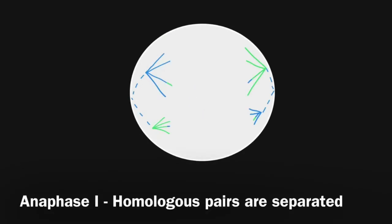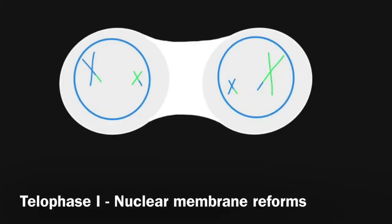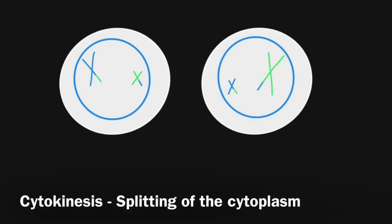Next is anaphase 1, where the homologous pairs are separated. The spindle fibres attach to the centromere and pull each chromosome in the homologous pairs to opposite poles. The nuclear membrane reforms during telophase 1, and this is followed by cytokinesis, where the cytoplasm splits to form two cells.